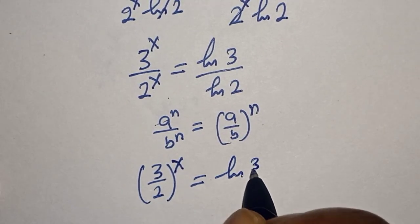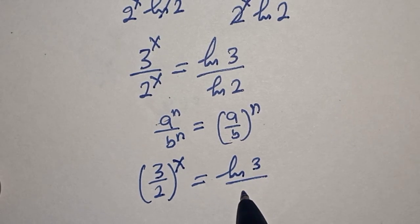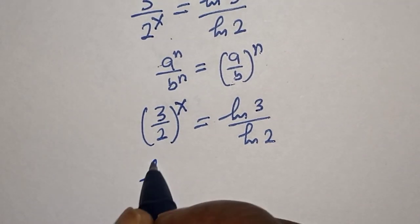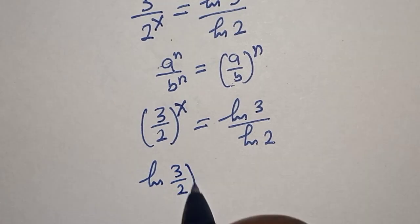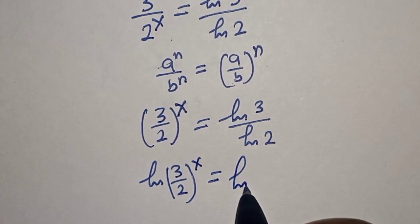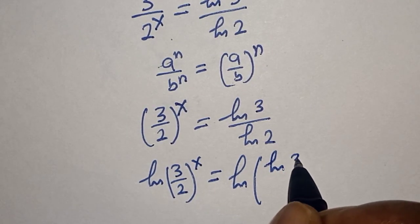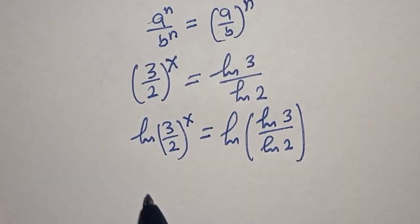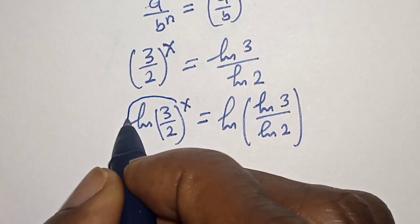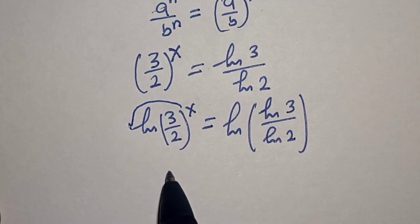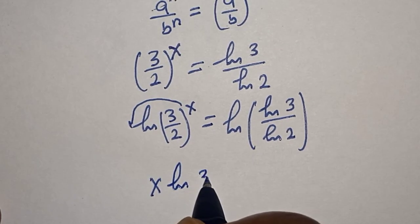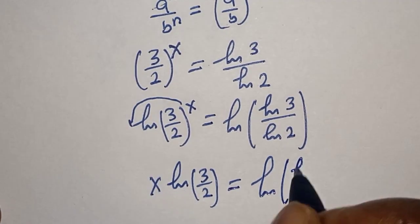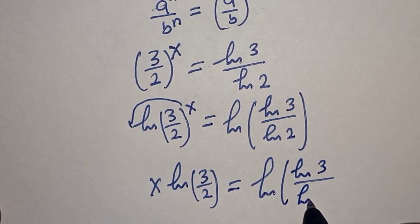Now let's take the natural log of both sides again. That is: natural log of 3 over 2 to the power of s is equal to natural log of natural log 3 over natural log 2. Bringing s to the front, we have s times natural log of 3 over 2 is equal to natural log of natural log 3 over natural log 2.